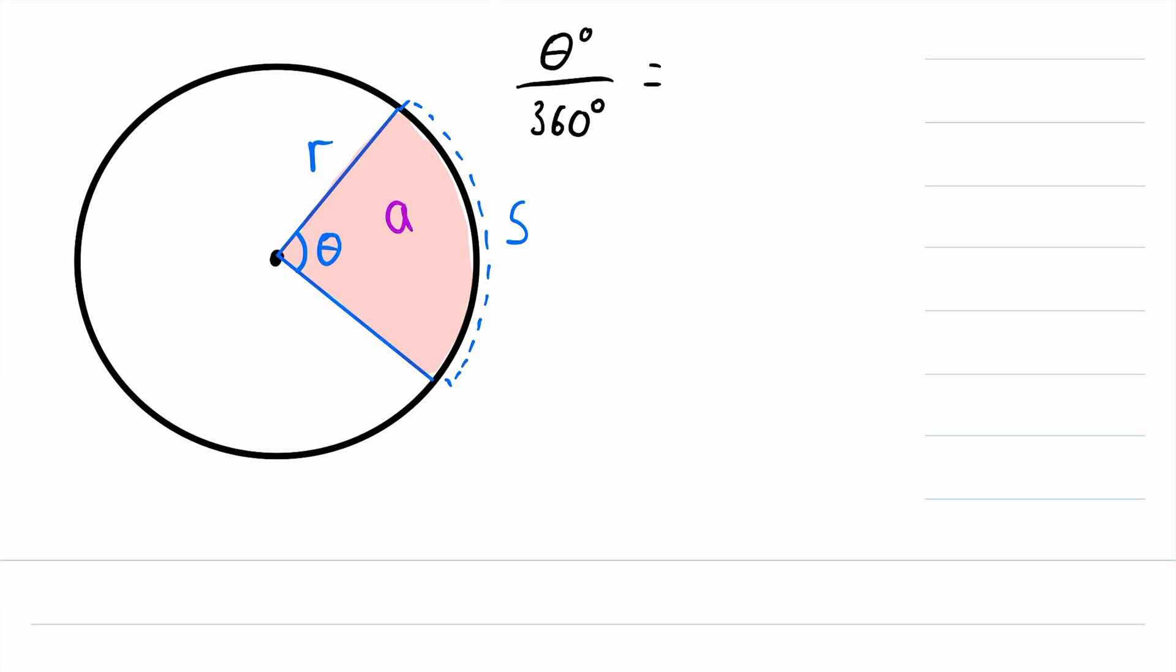...is equal to the area of the sector, which we said is A, divided by the area of the whole circle, which we know is pi R squared. Remember that R is the radius of the circle, and these ratios are also equal to this arc length S divided by the whole circumference of this circle, which is 2 times pi times R.